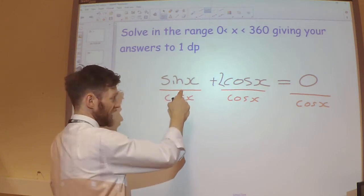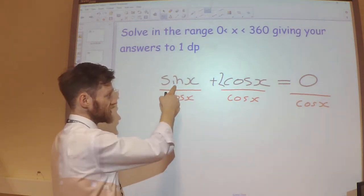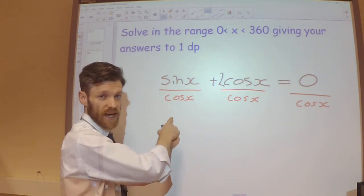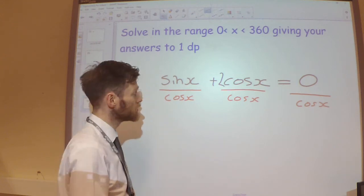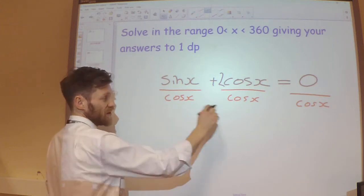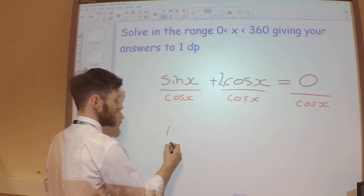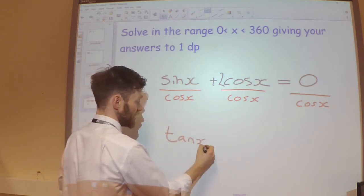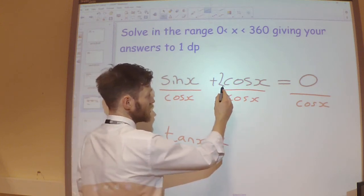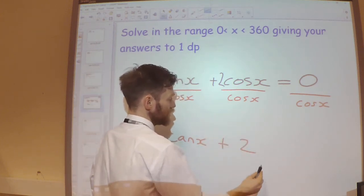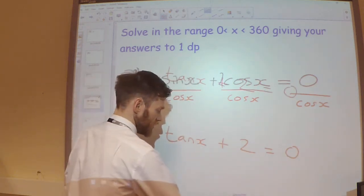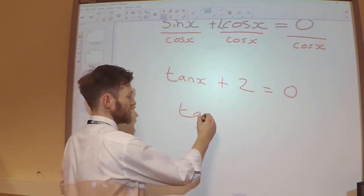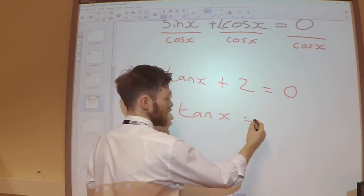But most importantly here, it allows me to combine the sine x divided by the cos x, which I know is tan x. So I can now rewrite this equation as tan x plus 2 equals 0. So tan x must be minus 2.